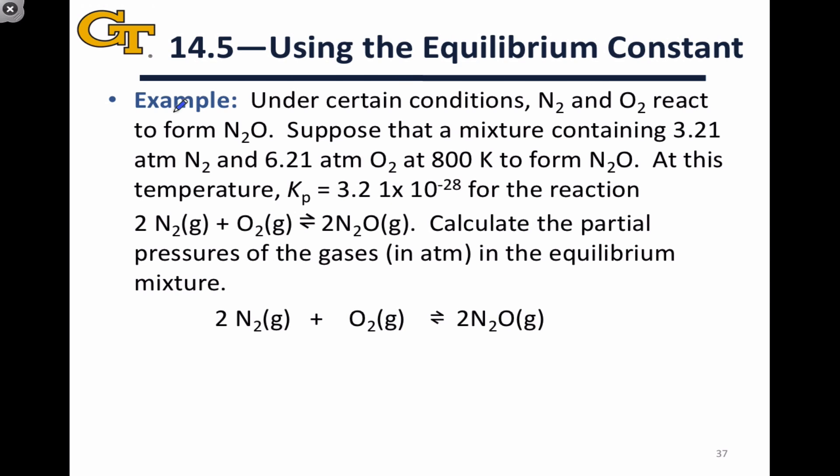Oftentimes, these problems will have large prompts because you're going to be given a lot of information about the initial conditions and the K value. In the context of this problem, we're looking at N₂ and O₂ reacting to form N₂O. A balanced chemical equation is given down here, and you want to pay attention to the phases when you're writing the equilibrium expression. All of these are gases, so we can write an equilibrium expression for this reaction based on the given balanced chemical equation.